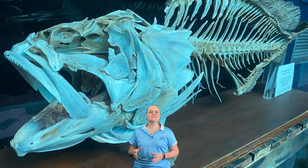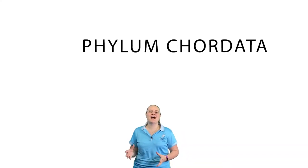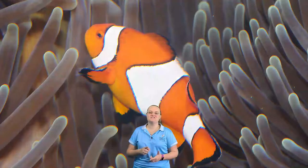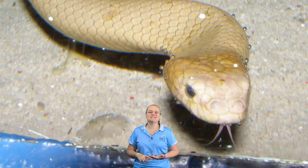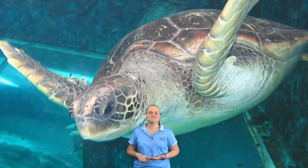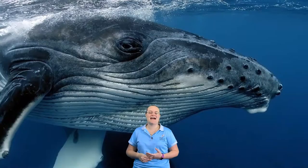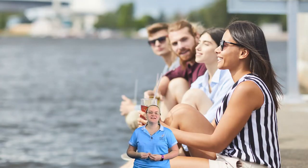Now the Chordata phylum consists of a lot of iconic animals such as fish, sharks, rays, reptiles like sea snakes and turtles, and even mammals such as dugongs, whales, and humans. Now let's head to Reef HQ Aquarium and have a look at some examples of Chordata species and learn a little bit more about the Chordata phylum.